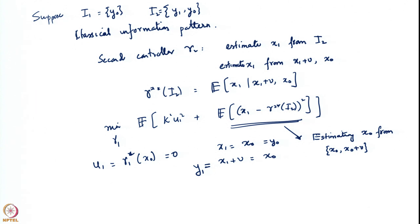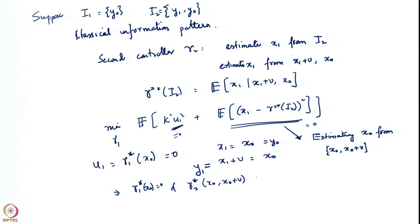You will actually get an error equal to 0. As a result, u1 star itself becomes equal to 0 and the second term also becomes equal to 0. Therefore γ1* equals 0 and γ2*(x0, x0+v) equals x0 is optimal.